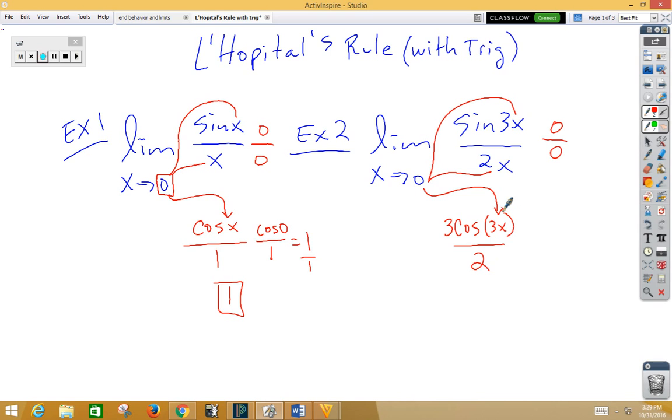Now when we plug in, we get 3 times cosine of 0 over 2, or 3 halves.